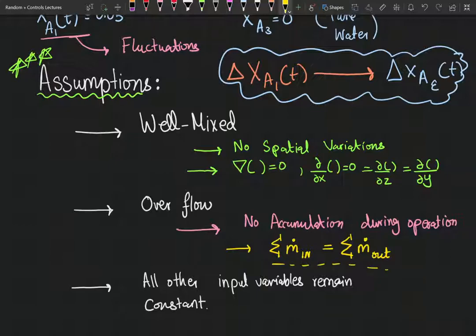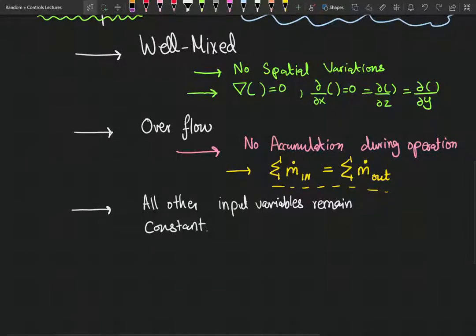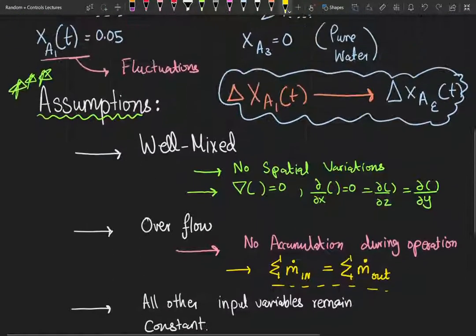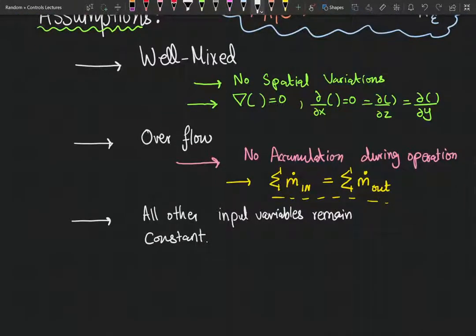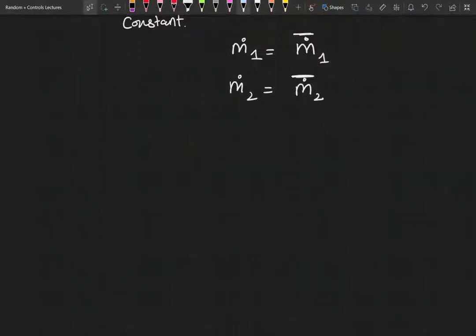All other input variables: we have our stream flow rates and this is pure water, so we know that m1 dot and m2 dot are steady. They don't deviate from their steady state values. This overbar represents steady. Now we need to make our model.